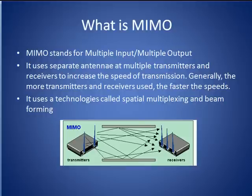MIMO stands for multiple input, multiple output. As shown here, MIMO uses multiple antennae at several transmitters and receivers to achieve increases in bandwidth. Generally speaking, the more transmitters and receivers that are used, the faster the speed that is delivered. The number of antennae at the receivers in a MIMO system is always greater than or equal to the number of transmitters.